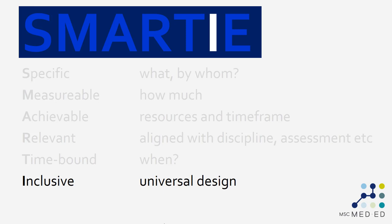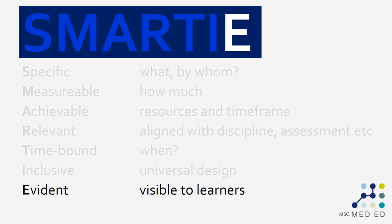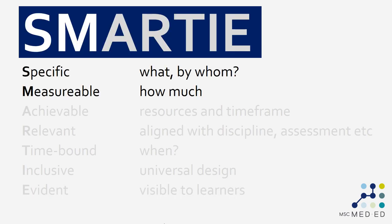If you start having to write separate learning outcomes for students with certain characteristics, then the learning outcome has become exclusive and you're not always measuring the same thing. E is for evidence — it helps to make your learners aware of what the learning outcome is. Don't just put it in a handbook or some other dusty dry document; put it up front at the beginning of a teaching activity. Of these elements of the SMARTY acronym, the two most important are probably specific and measurable.